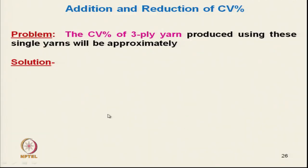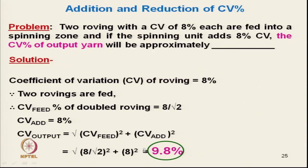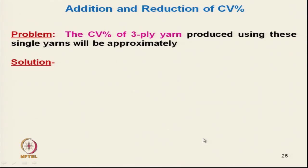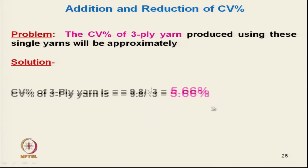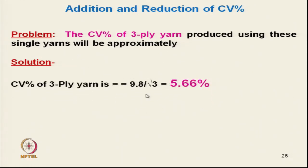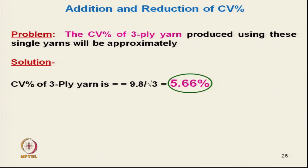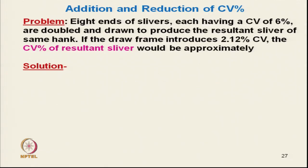The same 9.8% CV yarn is now plied 3 times. The 3-ply yarn CV = 9.8/√3 ≈ 5.66%. We can try different combinations, but the concept is straightforward.